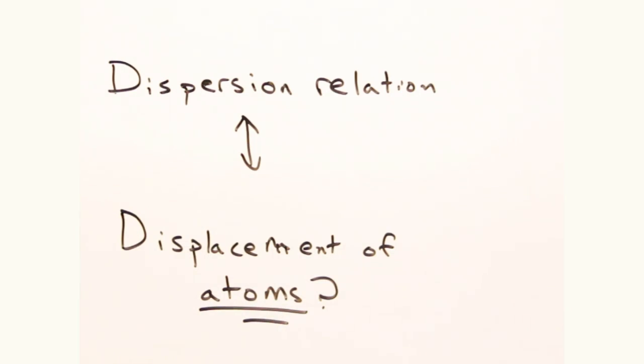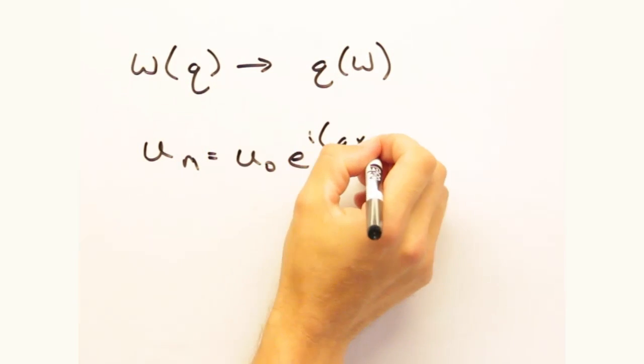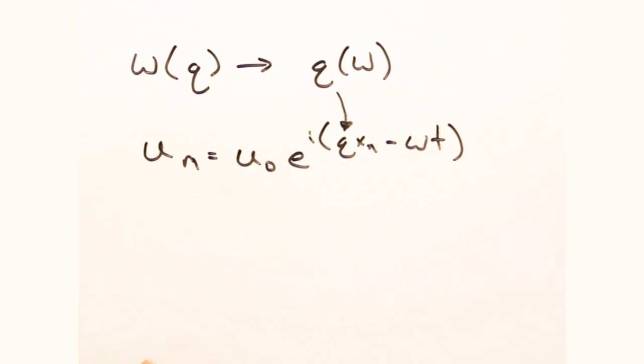We can dump this dispersion relationship back into our original displacement wave expression, and now we have a relationship between u as a function of omega and time. Maybe we should see an example to flesh this out.